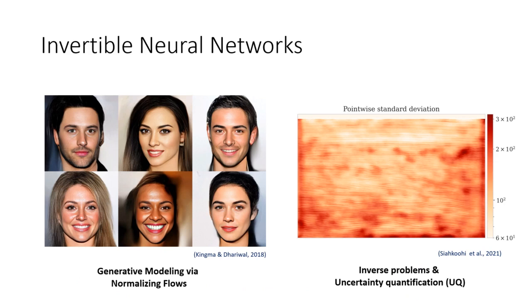Invertible neural networks are a class of networks that have become very popular over recent time, especially in the context of generative modeling via normalizing flows. Invertible neural networks, along with generative adversarial networks and variational autoencoders, are one of the best networks for generative modeling.